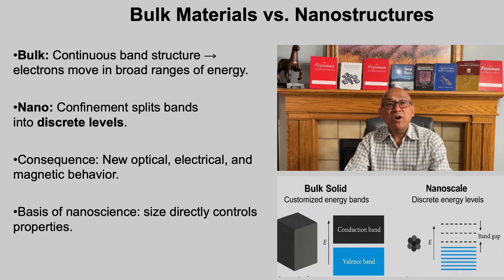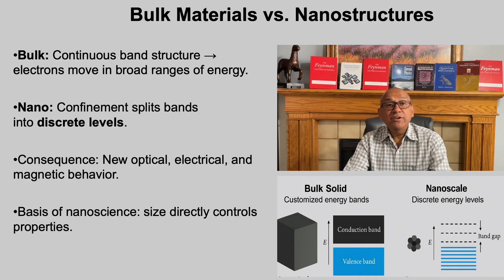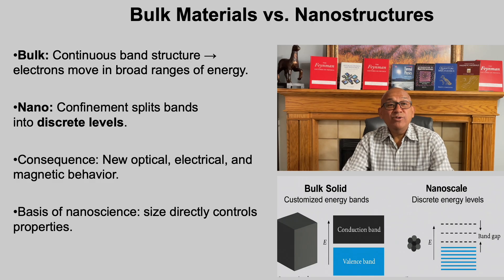Let us return to the central theme of nanotechnology — how size itself reshapes material properties. In bulk materials, electrons occupy continuous energy bands, giving rise to the familiar properties of metals, semiconductors, and insulators we study in classical solid state physics. But when we shrink materials to the nanoscale, confinement breaks these continuous bands into discrete energy levels. This is why nanoparticles, nanowires, and quantum dots behave so differently from their bulk counterparts. Nanostructures can change color depending on size, tune their conductivity, or display magnetic properties that bulk materials never show. The transition from bulk to nano is not just a matter of scaling down — it is a fundamental shift in how electrons, and therefore matter itself, behave.